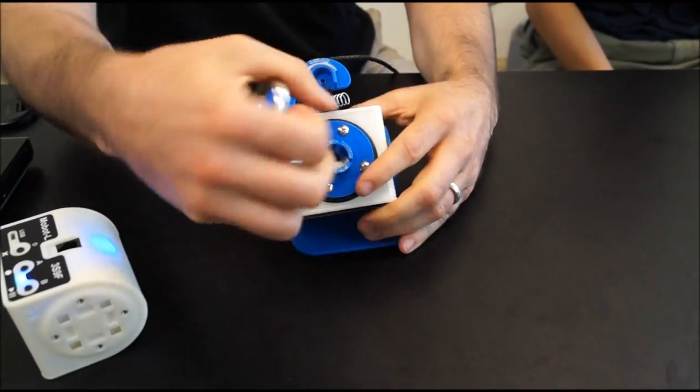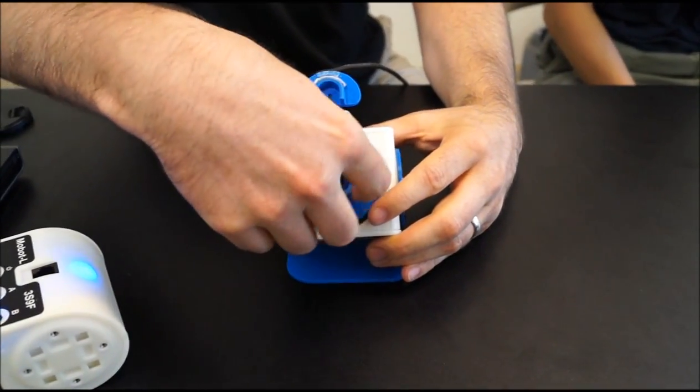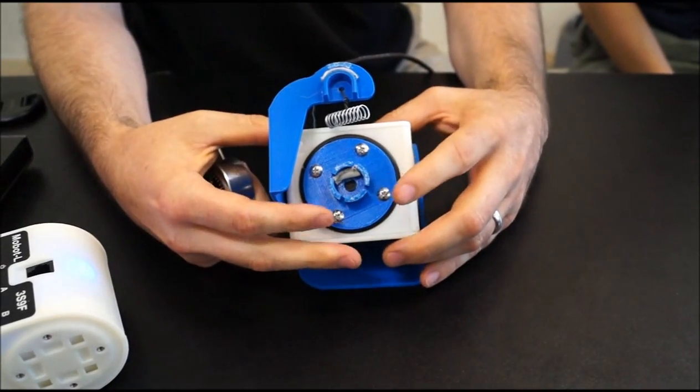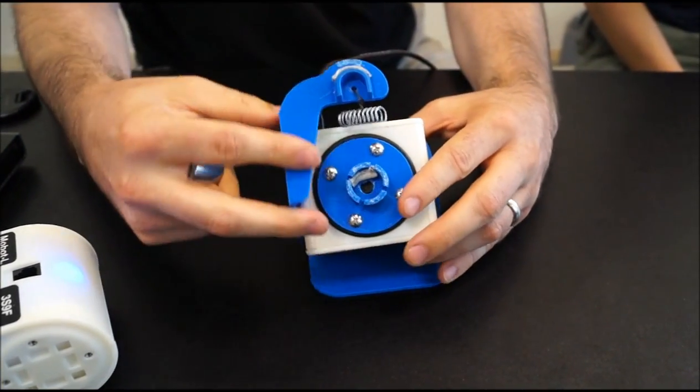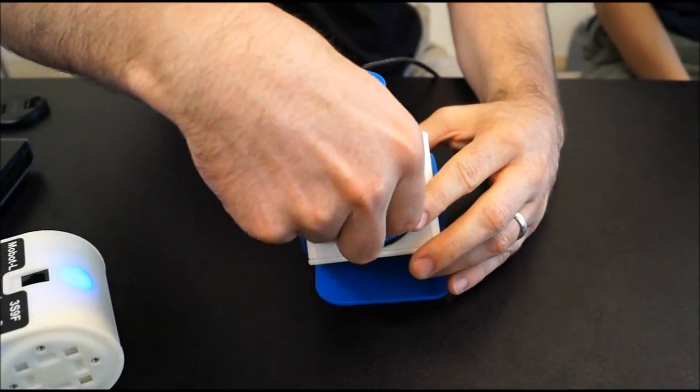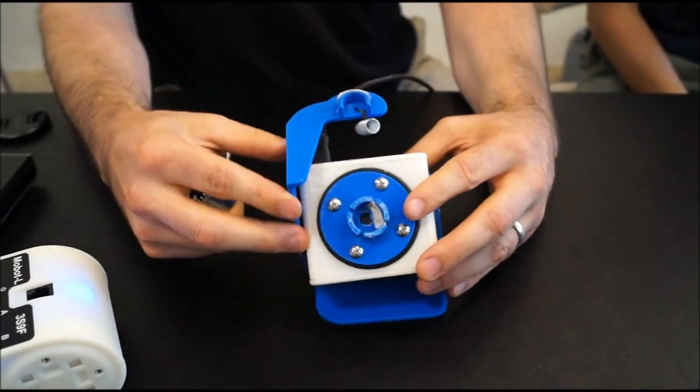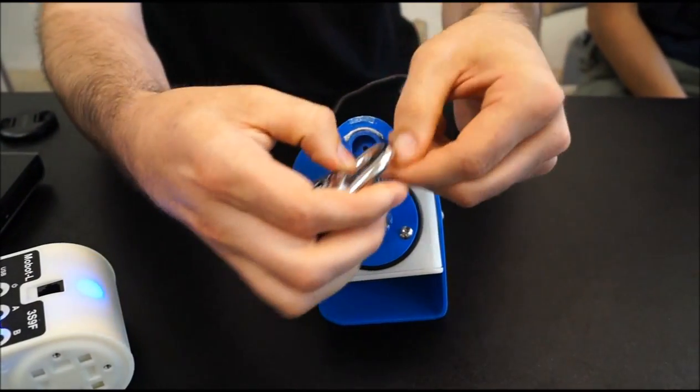So what we've done is we've created these accessories, these attachments that screw right onto the sides and the front of the robot. This front face rotates the padlock, and this side face pops the lock.